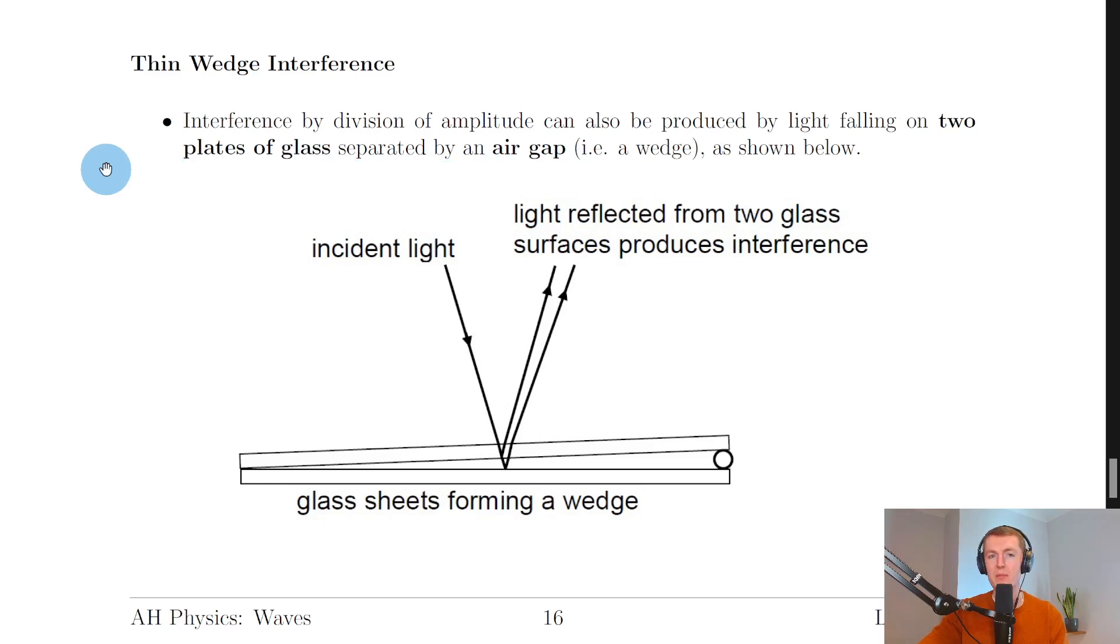Our last application of interference by division of amplitude is thin wedge interference. Interference by division of amplitude can also be produced by light falling on two plates of glass separated by an air gap, i.e. a wedge, as shown below.